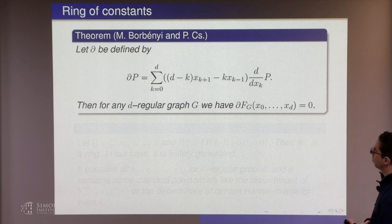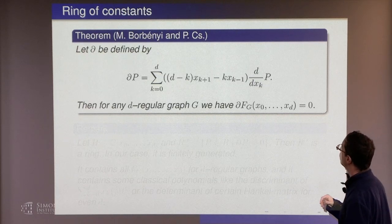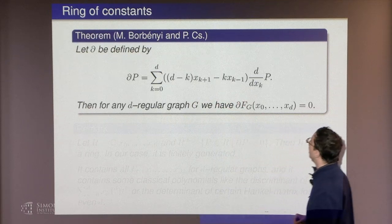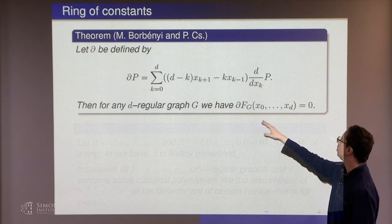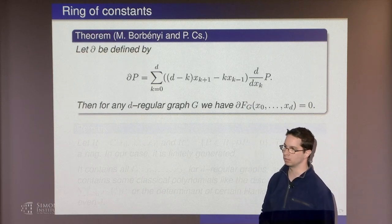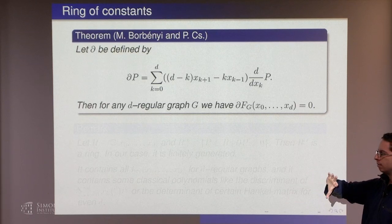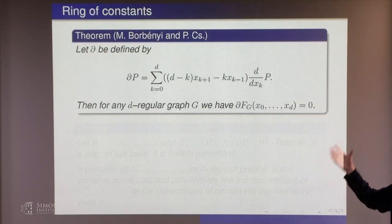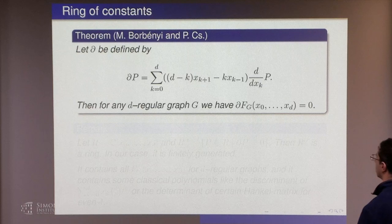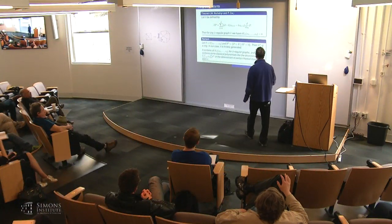Another way to analyze this polynomial is to consider a differential form. It turns out that for every d-regular graph G, the derivative of this polynomial is 0 under this differentiation. In invariant theory there are two sides of a coin: one is this rotation, and the other is this differentiation form. We can always find such a thing, or at least in many cases.